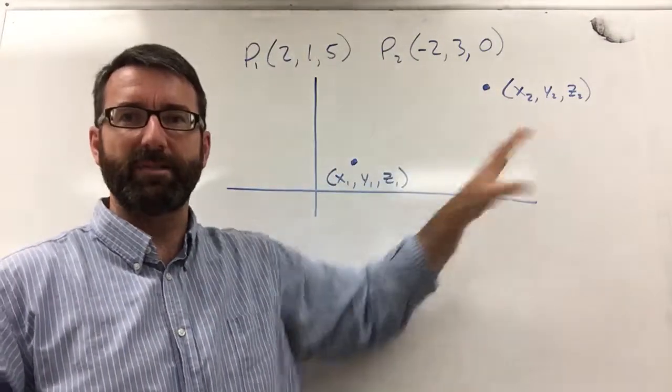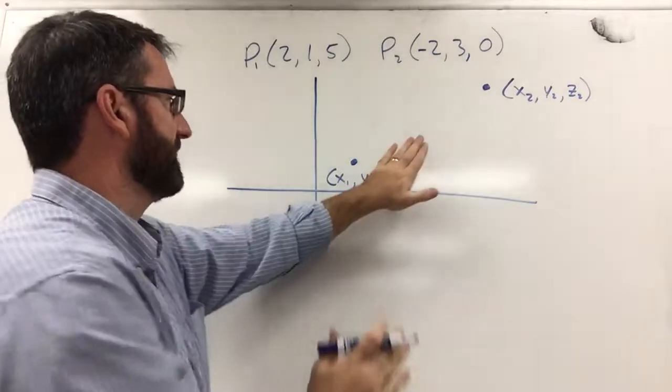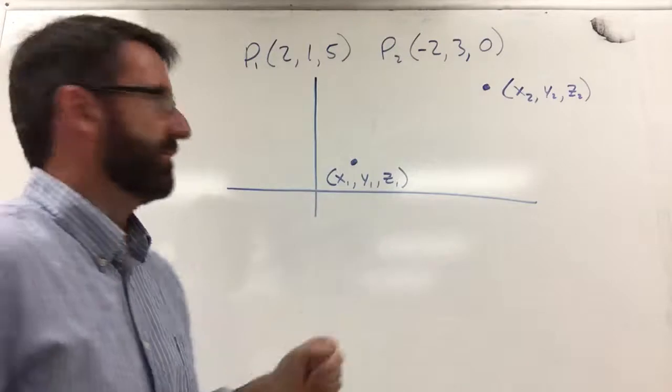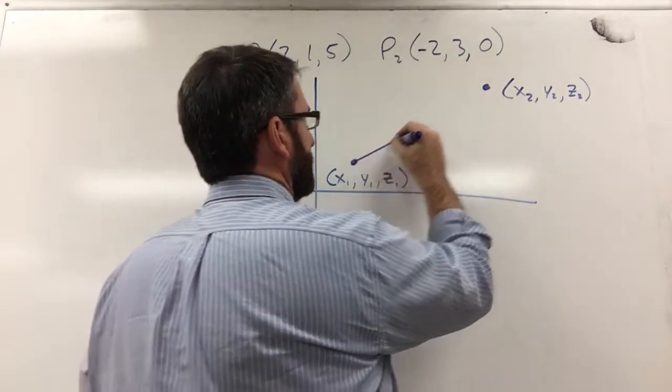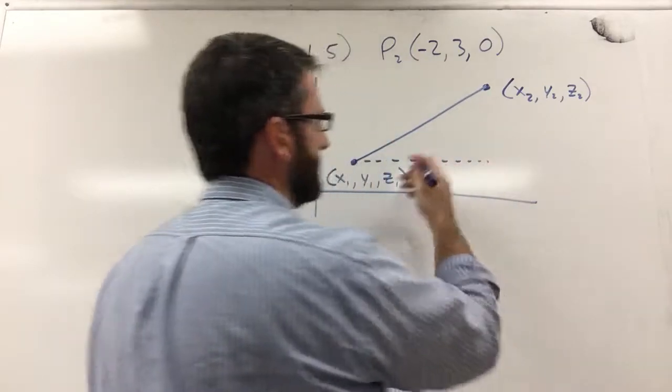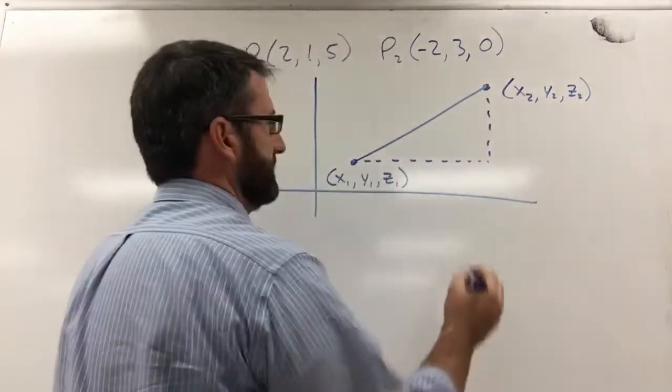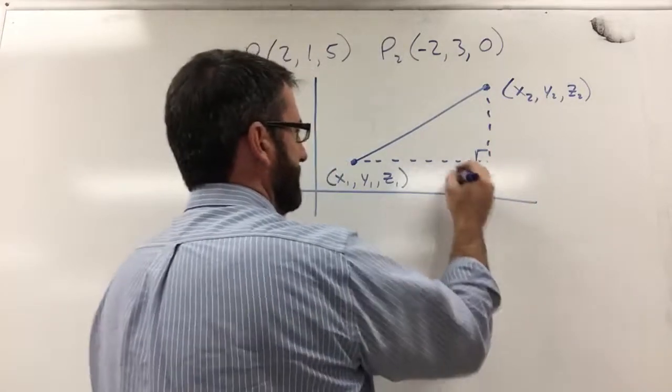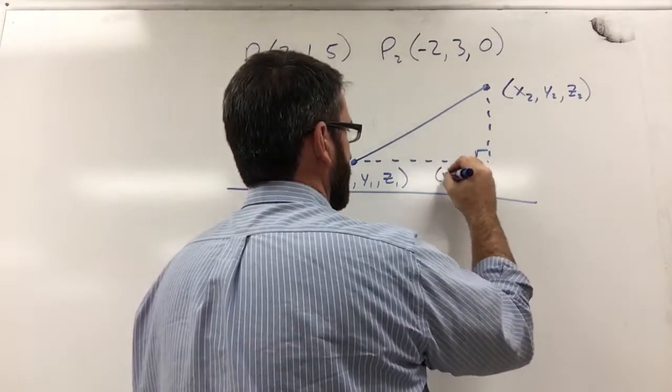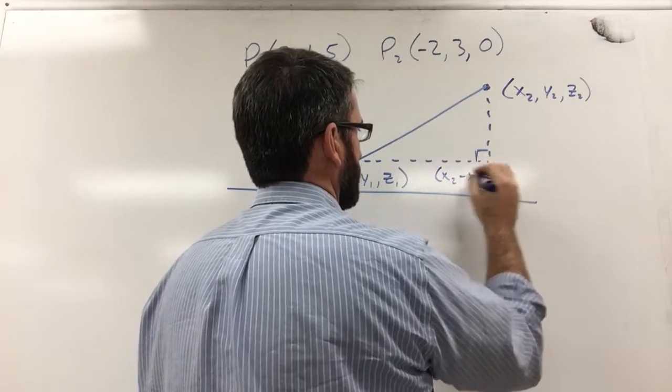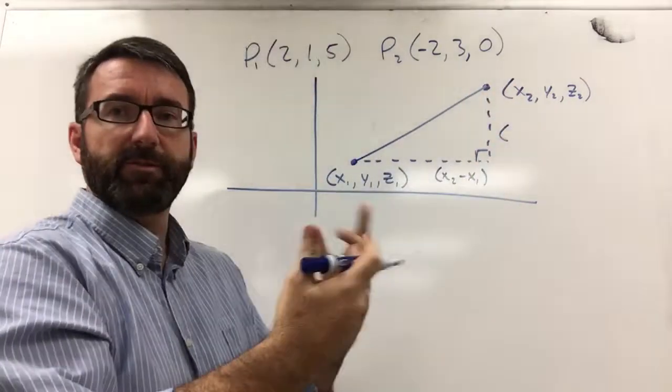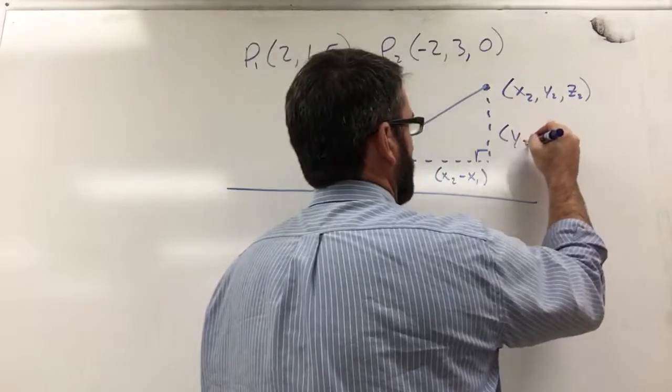Now, just thinking about this on one plane for right now. We're just going to ignore the z's for right now. We know how to find the distance between those two points. This distance here is going to be made up of this horizontal distance and this vertical distance. And we know that this horizontal distance is the difference between the x values. So that's x₂ minus x₁. That's this distance. And then this distance is going to be the difference in the y values. So y₂ minus y₁.